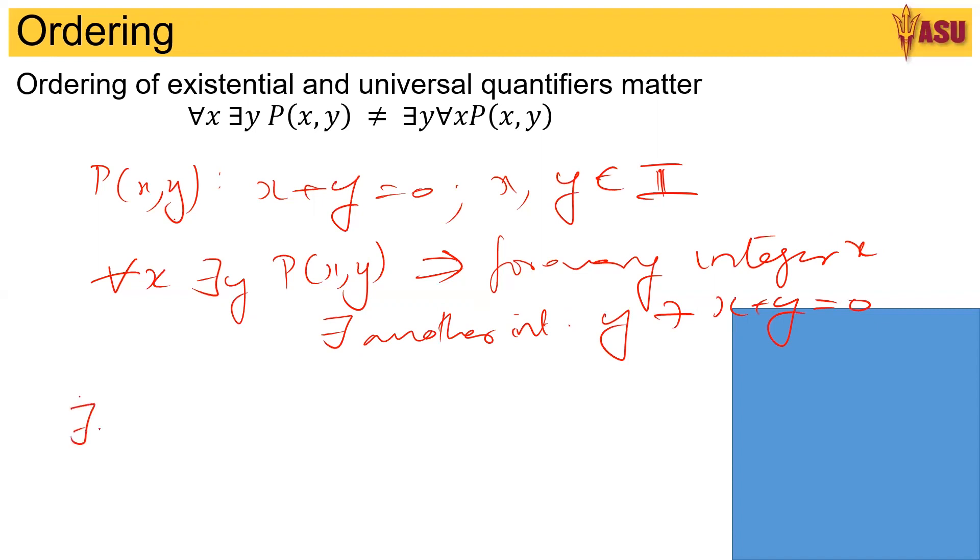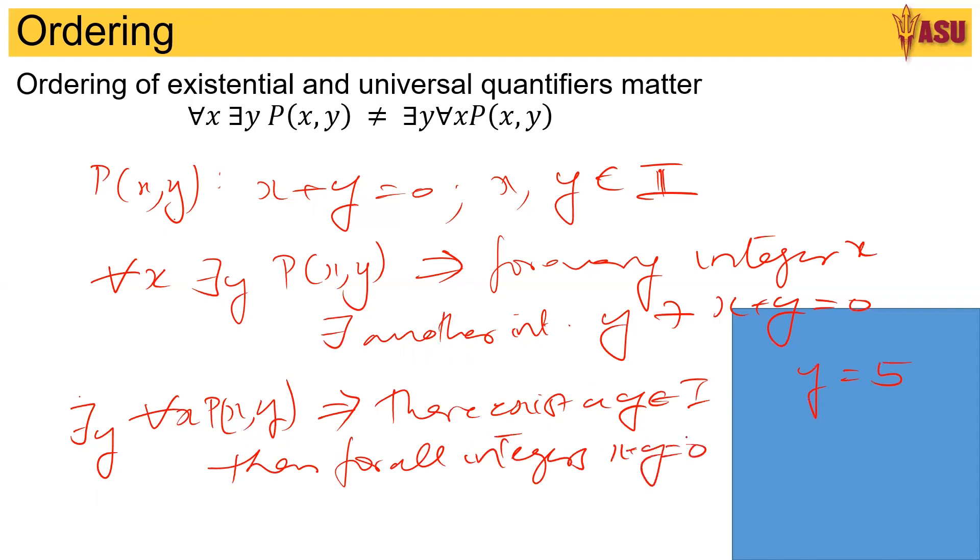Now what about there exists y for all x, P(x,y). What does this imply? This says there exists a y. So you are given one integer y, say something like y equals 5. So that's one integer belonging to integers. Then for all integers x plus y is equal to 0. Now this does not hold true because x can be any integer. So say x equals 2 here, x plus y is not equal to 0.